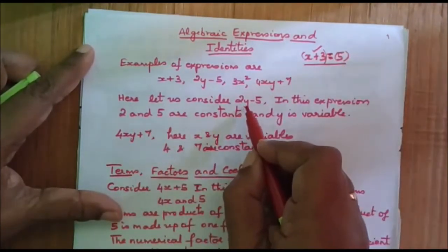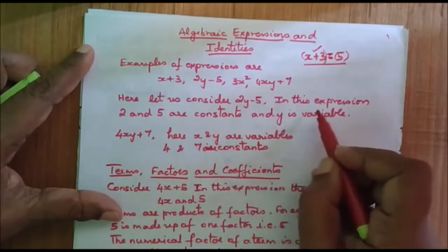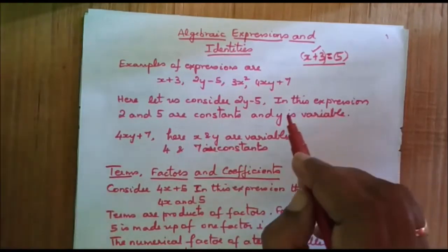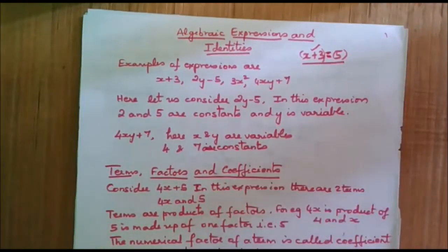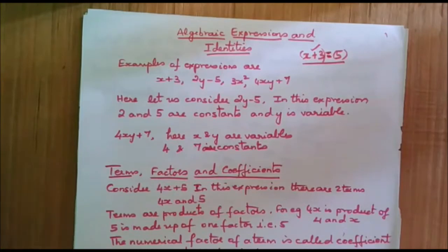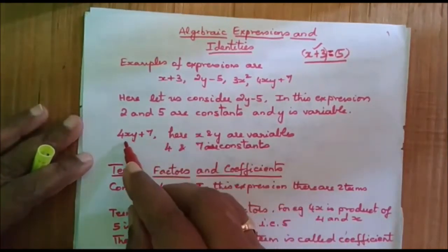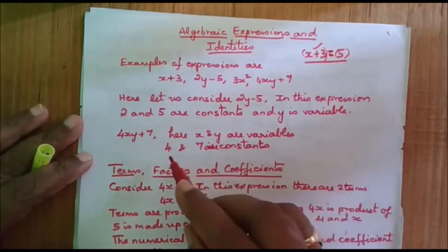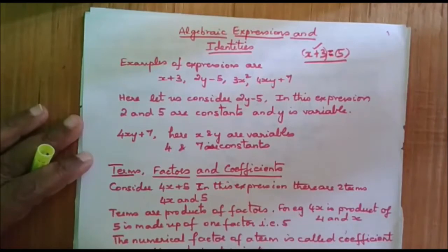Now let us consider 2y minus 5. In this expression, 2 is a constant and y is a variable because the value of y varies. Hence y is called a variable and 2 and 5 are the constants. Similarly, in the expression 4xy plus 7, x and y are variables and 4 and 7 are constants.